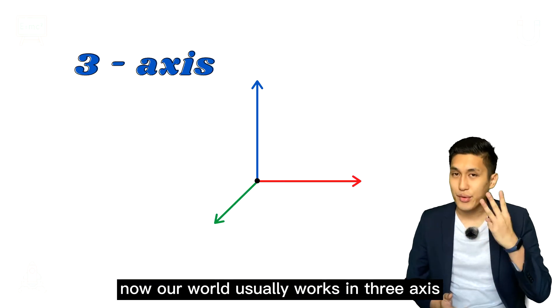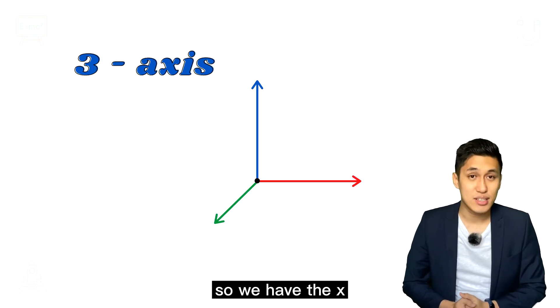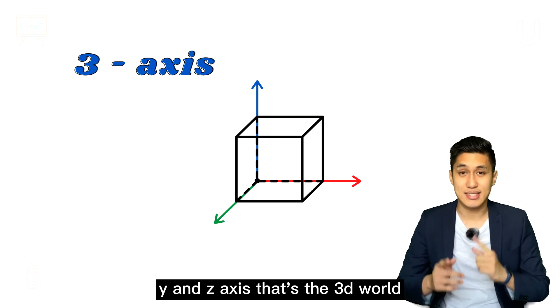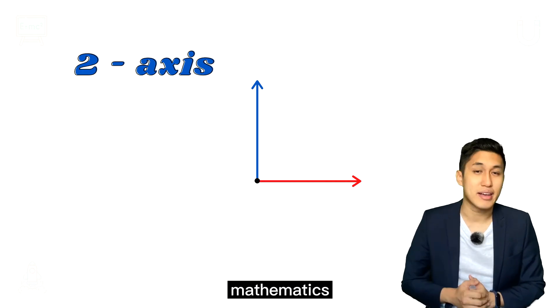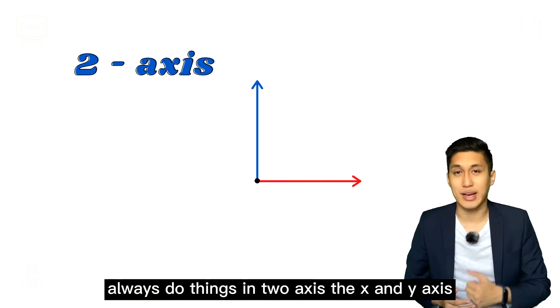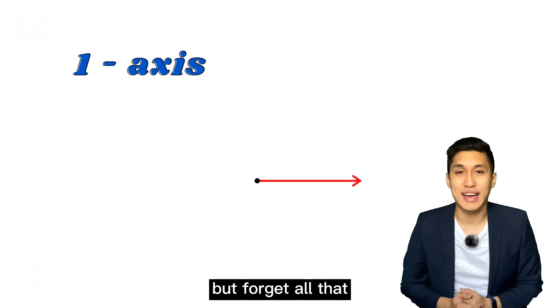Now, our world usually works in three axes. So we have the X, Y, and Z axis. That's the 3D world. Mathematics always do things in two axes, the X and Y axis. But forget all that.